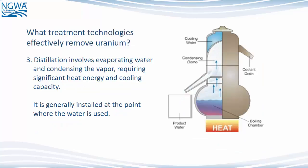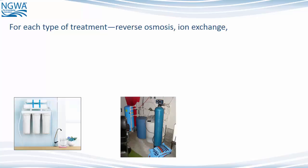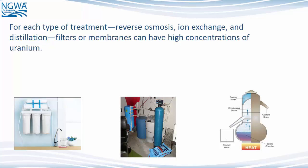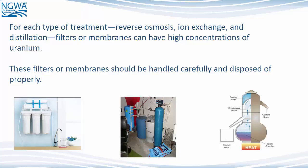A third option is called distillation. Distillation involves evaporating water and condensing the vapor, requiring significant heat energy and cooling capacity. It is generally installed at the point where the water is used. For each type of treatment — reverse osmosis, ion exchange, and distillation — filters or membranes can have high concentrations of uranium. These filters or membranes should be handled carefully and disposed of properly.